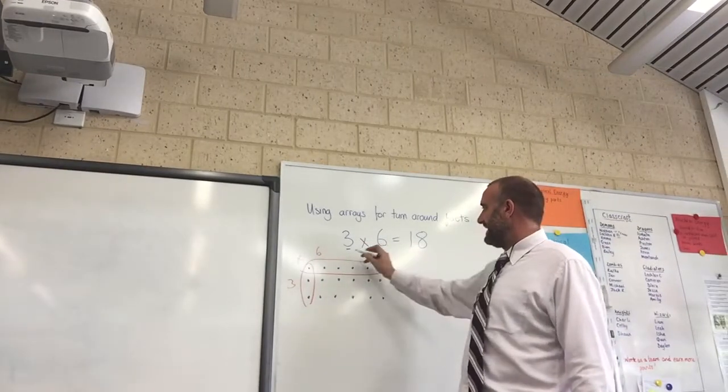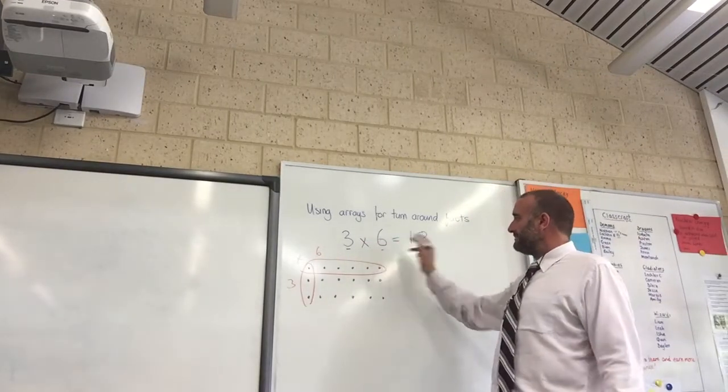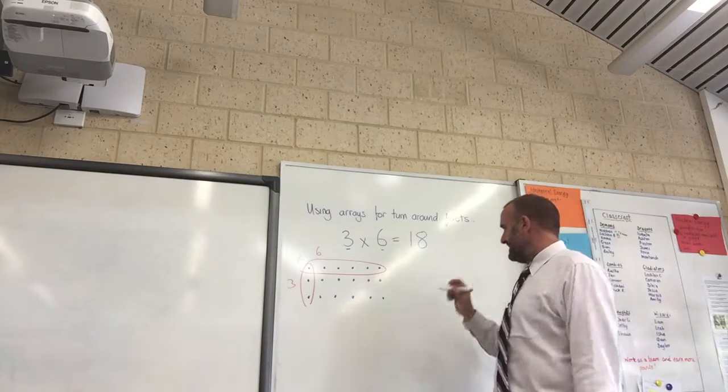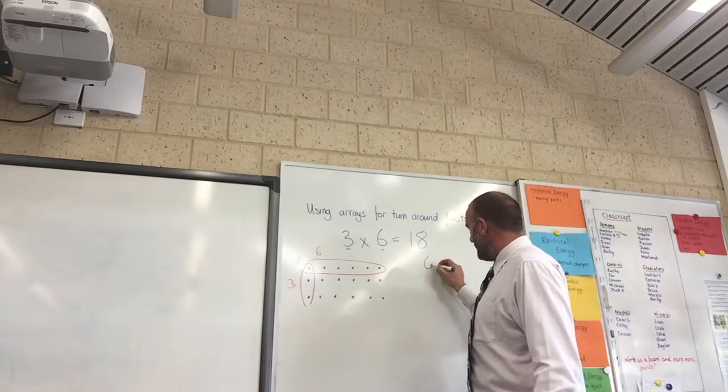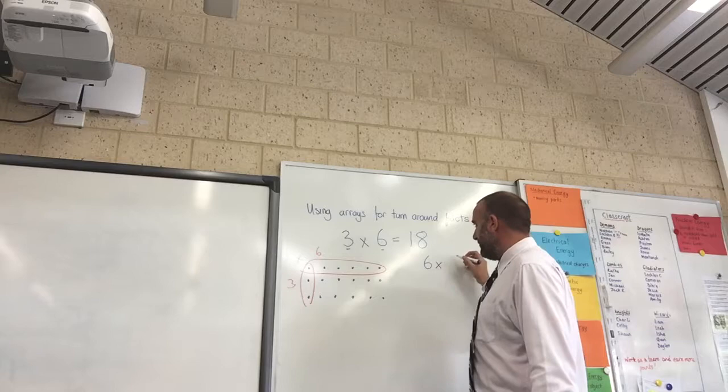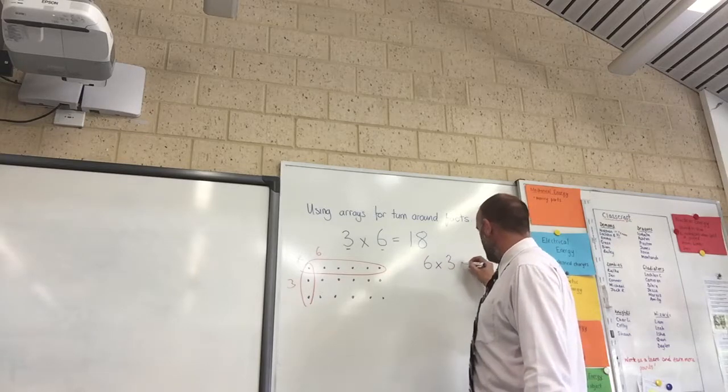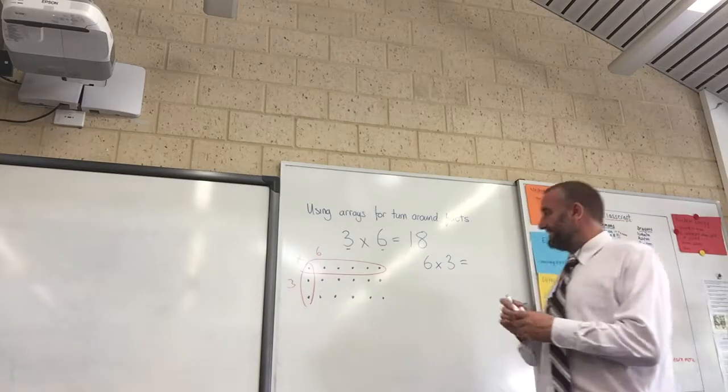It's about our understanding of multiplication. So we know that 3 multiplied by 6 equals 18. If we turn that problem around and turn it into 6 multiplied by 3, we need to know what our answer is.